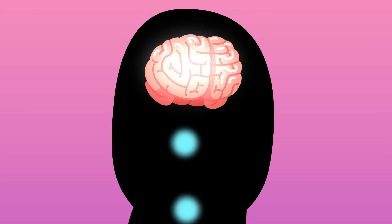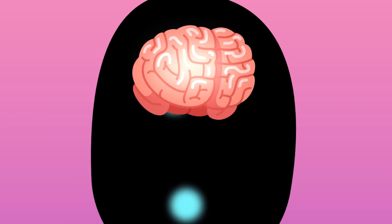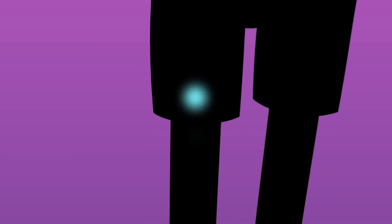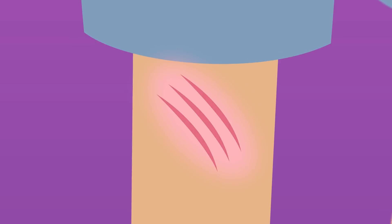Once the clot forms and the bleeding stops, it's time for your body to start healing the wound. As the blood clot dries out, it hardens and forms a protective layer over the cut. That's the scab.